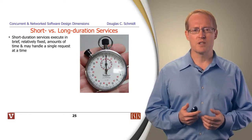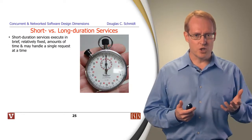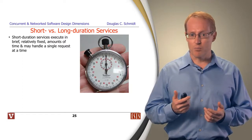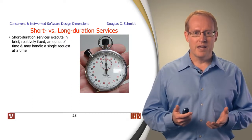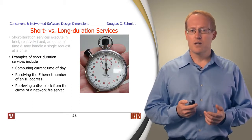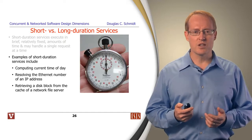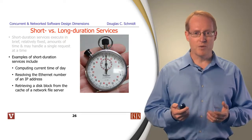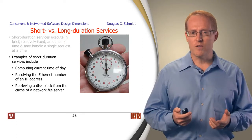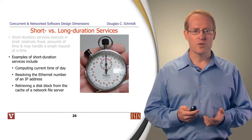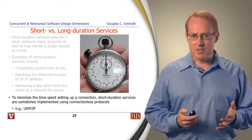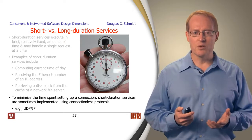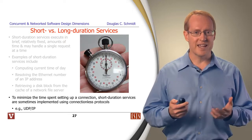Let's talk about a couple of different types of services. One type is a short duration versus a long duration service. A short duration service executes for a brief, relatively fixed amount of time and may handle one request at a time. Examples include returning the current time of day, resolving the Ethernet number from an IP address, or retrieving a disk block from a network file server cache. To minimize connection setup time, short duration services are sometimes implemented using connectionless protocols like UDP/IP.